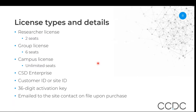For license types, you can have a researcher license available for two seats, a group license for six seats, and a campus license which grants unlimited licenses. Each license that we provide to academics is a CSD enterprise license. Once you obtain your license for the first time, you get a customer ID or site ID — it's the same number — along with the 36-digit activation key. These numbers will not change and will be emailed to the site contact upon first purchase, but subsequently will not be re-emailed, so reach out to us if you need that information.